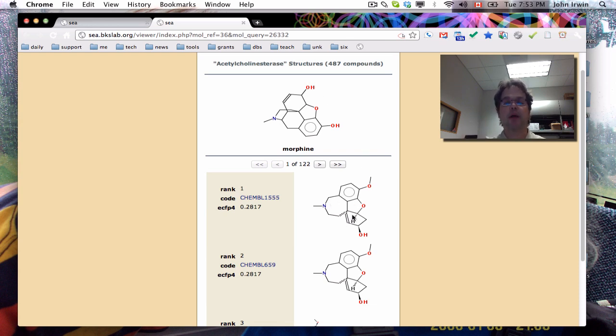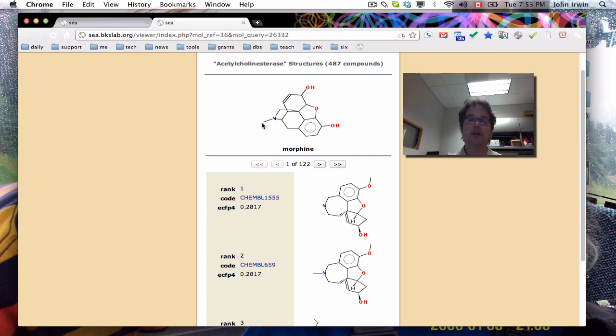And so you could take this compound and purchase it, this one, sorry, this compound here, and purchase it for, so morphine, if you can get it, against acetylcholinesterase. Anyways, it's a Schedule, I'm sure it's a Schedule 1 compound, isn't it? So, that looks like a pretty good prediction.